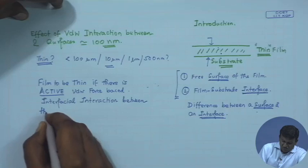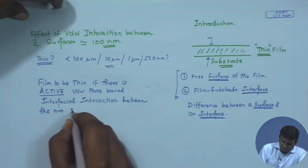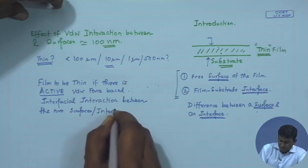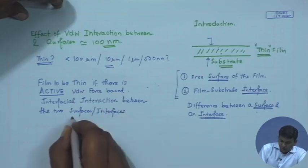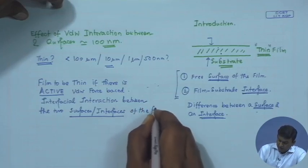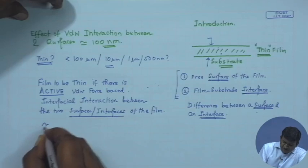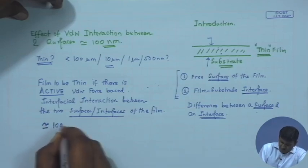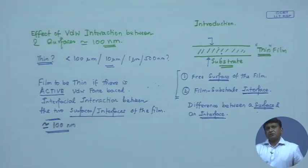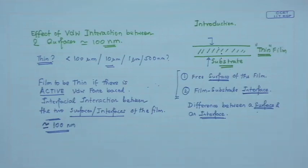This sets roughly 100 nanometers as the limit. Any film thicker than 100 nanometers we will not consider to be a thin film, simply because there is virtually no interfacial interaction.